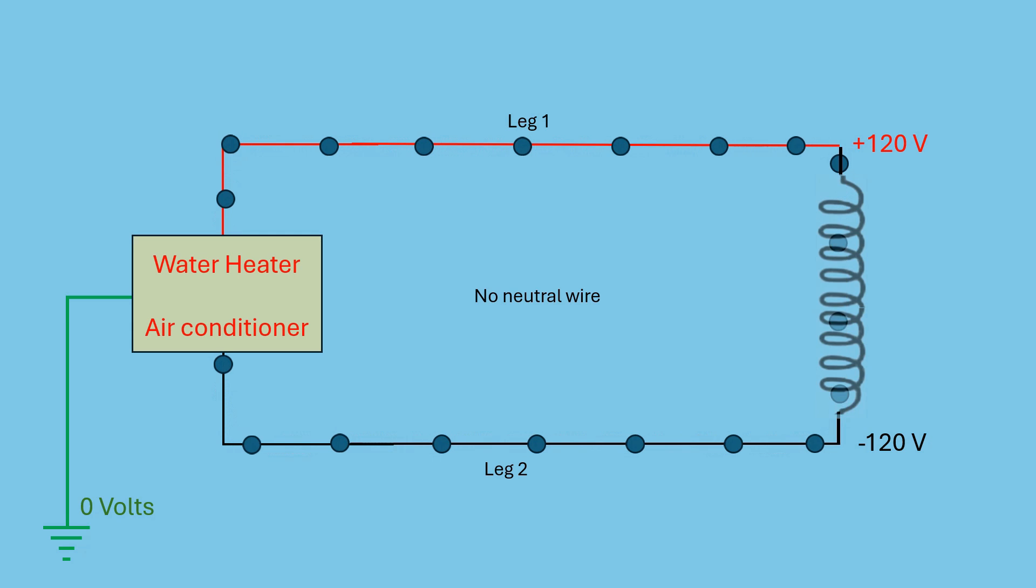The current flows from one side of the transformer through the load, like a water heater or an air conditioner, and back to the transformer. You'll notice that there is no neutral wire in the circuit. These appliances don't need a neutral.